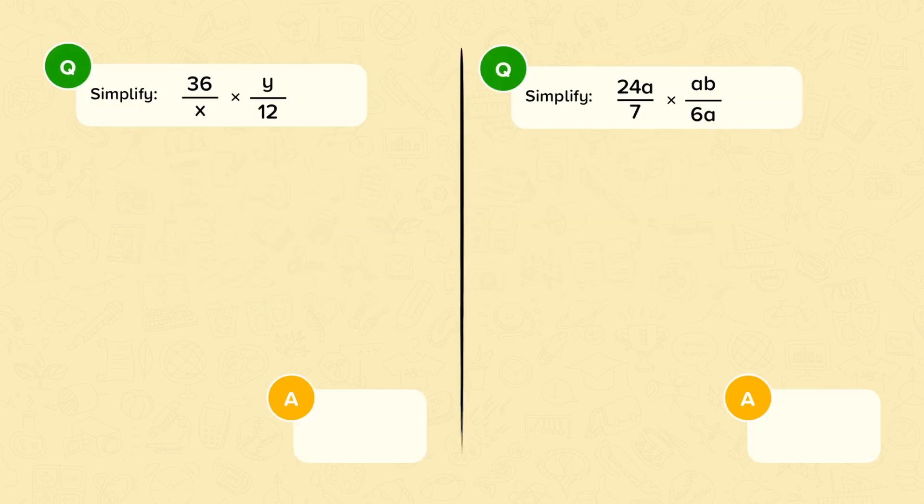Question. Simplify 36 over x multiplied by y over 12. Now, before we even do this multiplication, we can cancel out some common factors. Look at this 36 and this 12. I can divide both of these by 12.